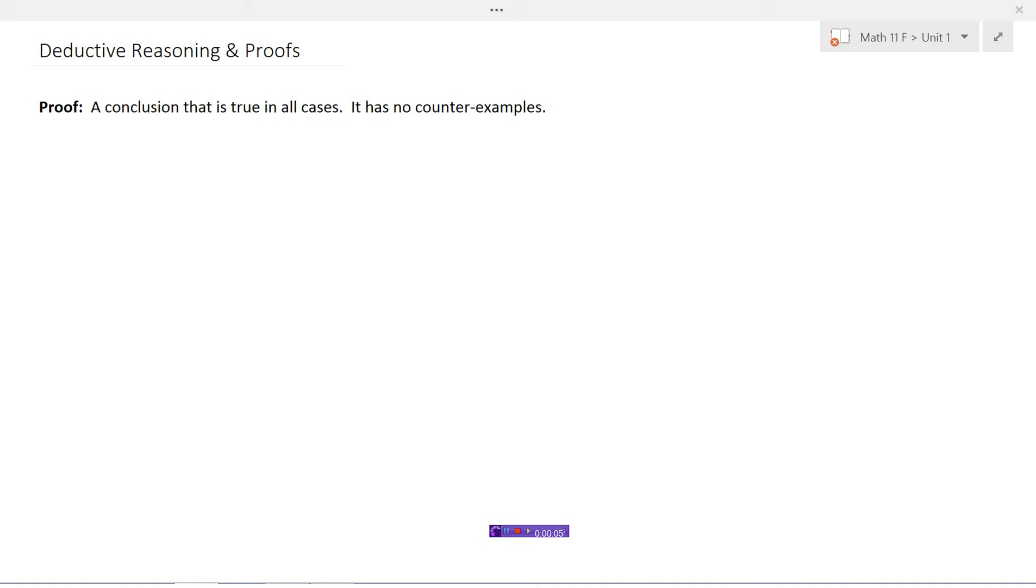So we've looked at conjectures. Conjectures, remember, are a conclusion that we come up with from a bunch of examples. And now we're going to look at proofs. So a proof is a conclusion that we can make that is true in all cases. It has no counterexamples.